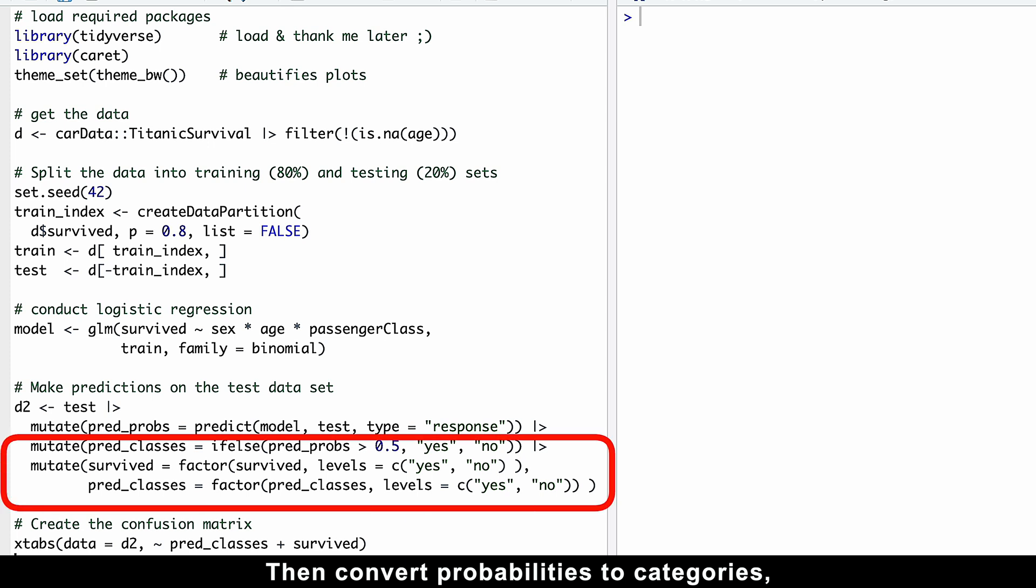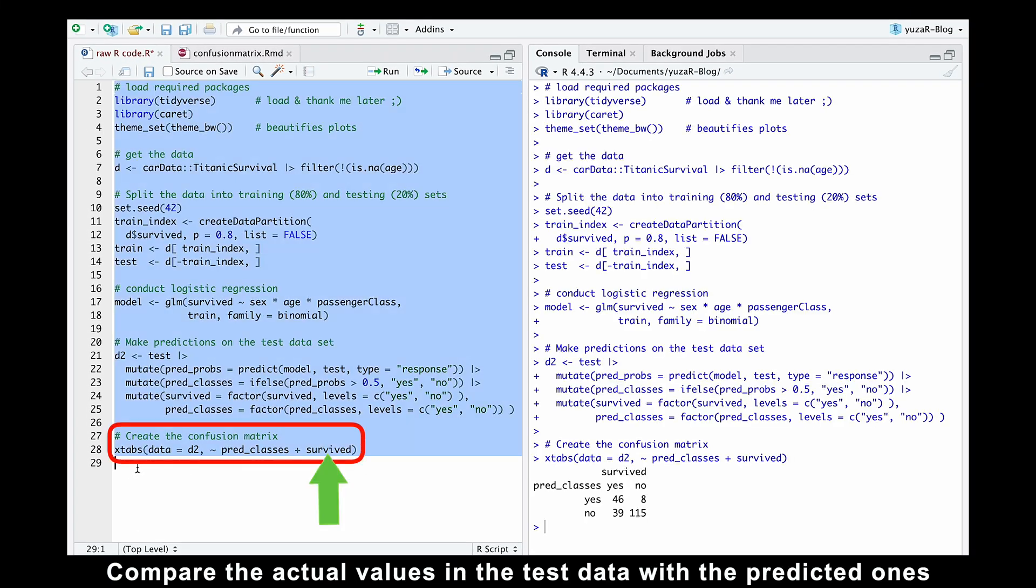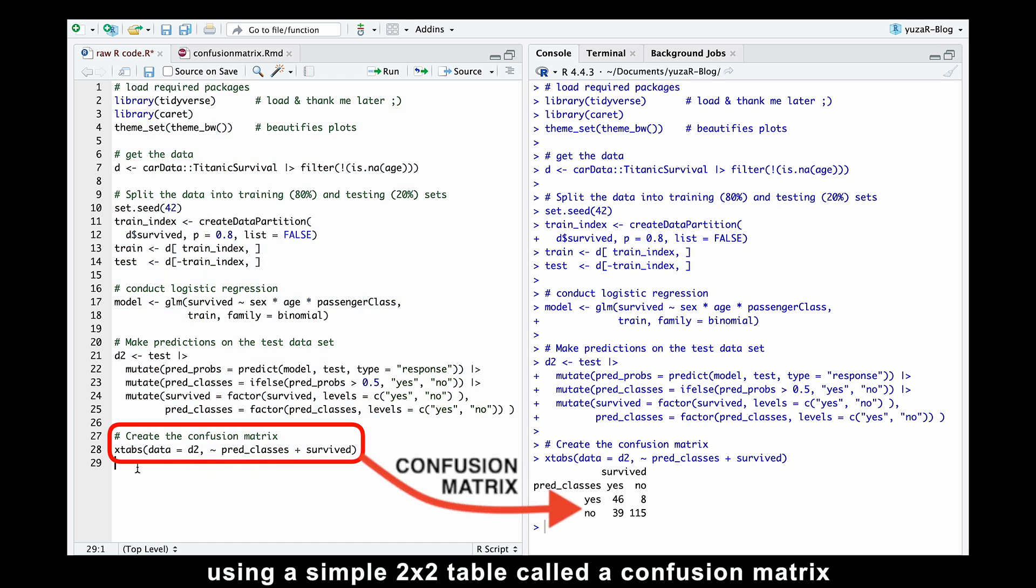Then convert probabilities to categories. Namely, if the probability is greater than 0.5, classify it as yes. If it's 0.5 or lower, classify it as no. Finally, compare the actual values in the test data with the predicted ones using a simple 2x2 table called a confusion matrix.